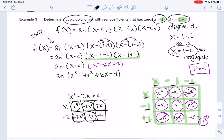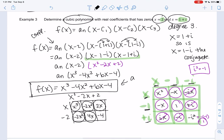2, 1 plus i, and 1 minus i. And then a sub n can be anything. You could make it 5. You could make it 2. You could make it 1. I'm just going to make it 1 because that's easy. So f of x is x cubed minus 4x squared plus 6x minus 4. But this is not the only solution. This is a solution.